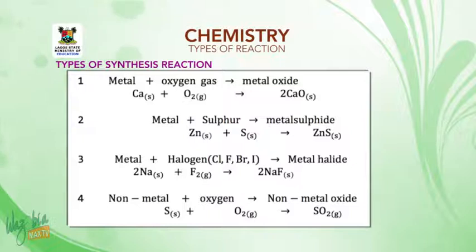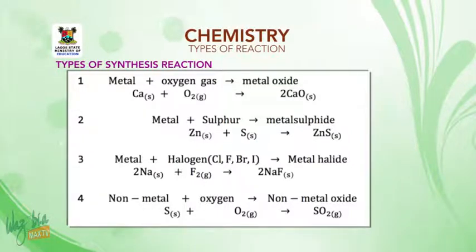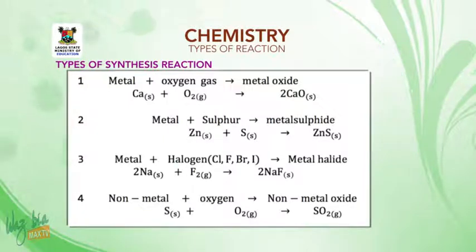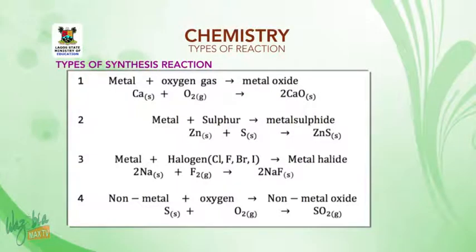Types of synthesis reaction. One: metal and oxygen gas gives metal oxide. For example, calcium plus oxygen gas gives two moles of calcium oxide. Number two: metal plus sulfur gives metal sulfide. For example, zinc plus sulfur gives zinc sulfide.